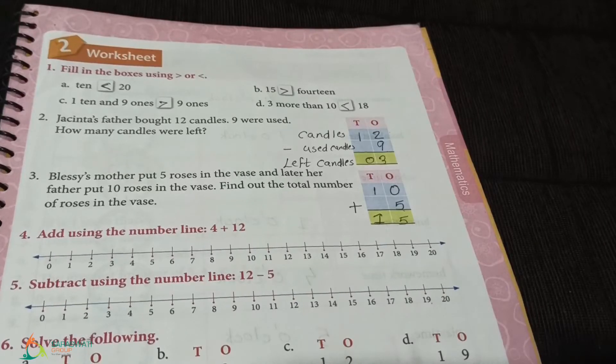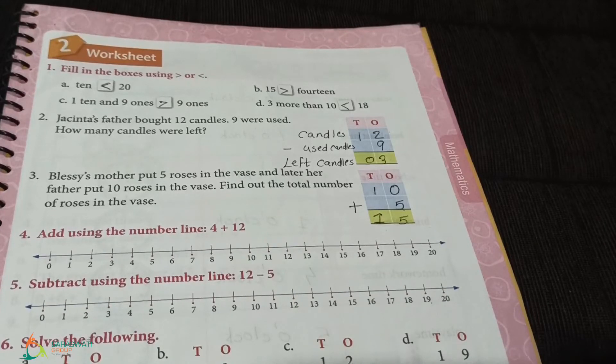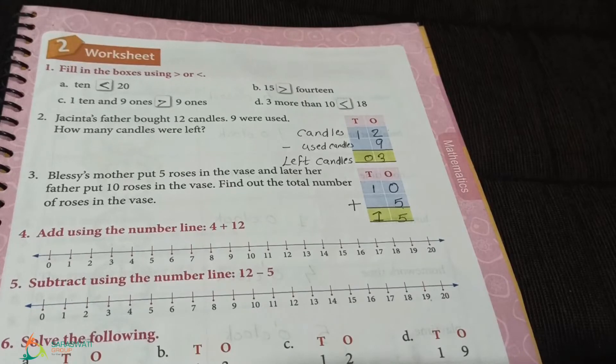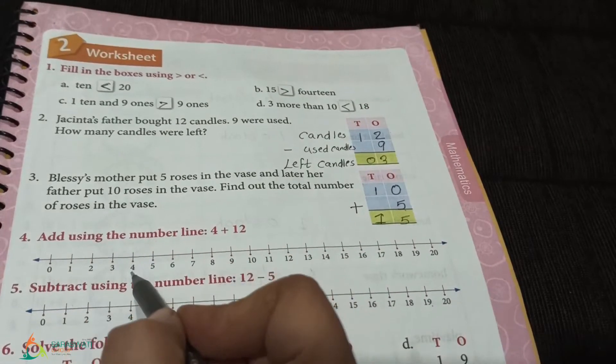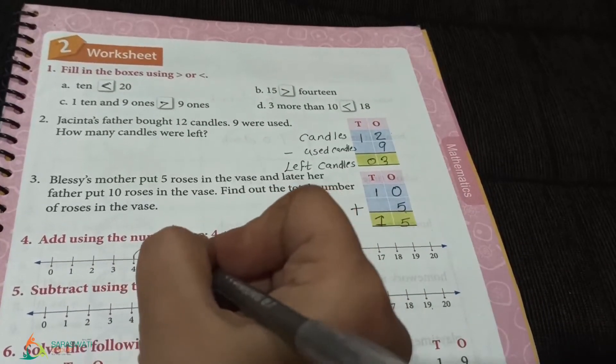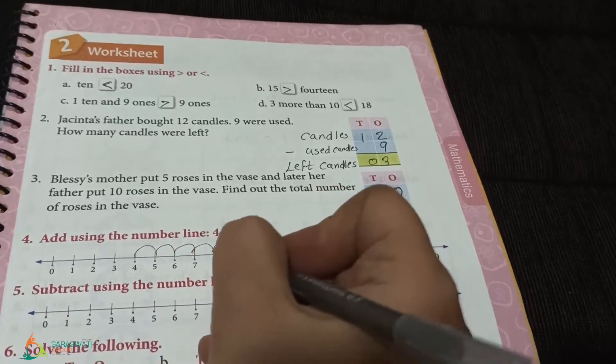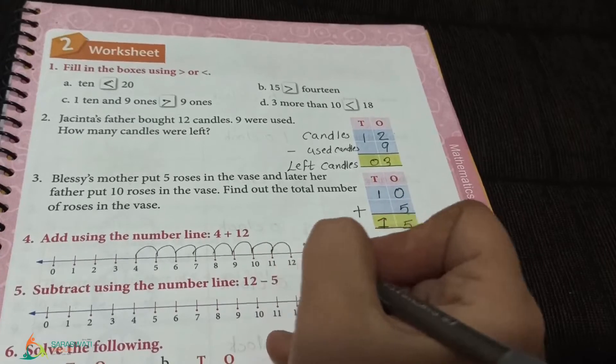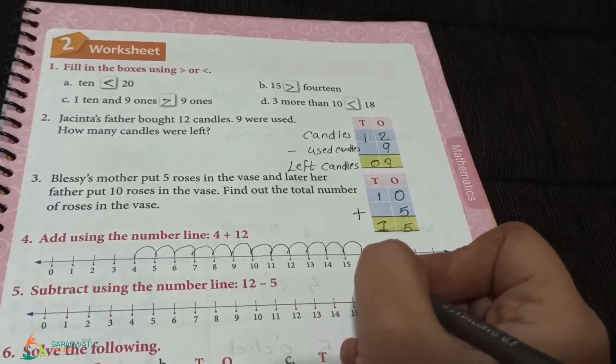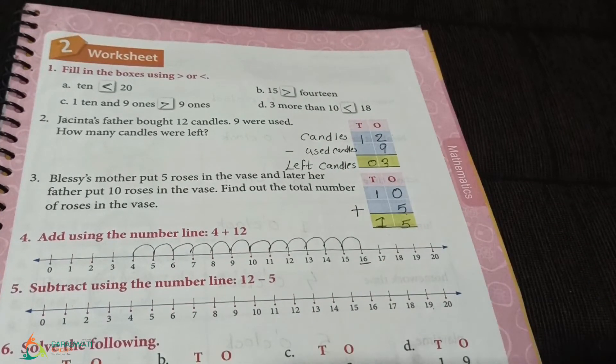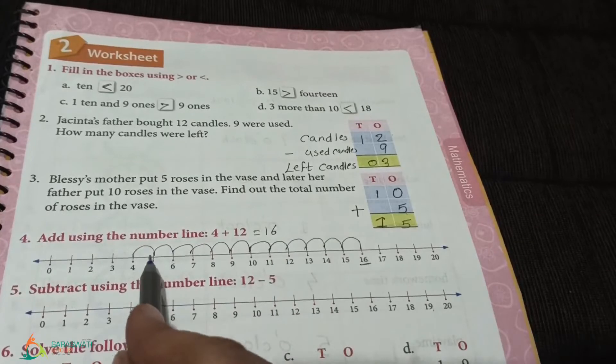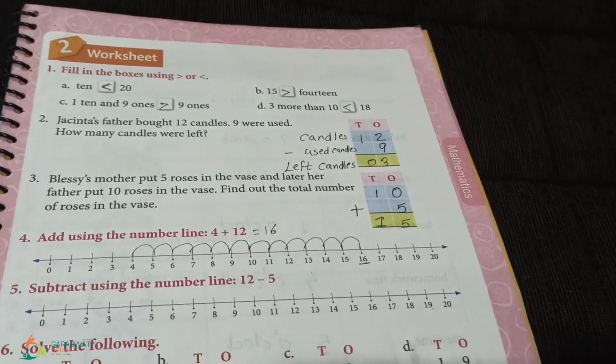Next question, add using the number line. 4 plus 12. Addition means counting forward. See, I am doing with pen, but you all are supposed to do it with pencil. First we find 4 on the number line, then plus 12 counting forward. So, 1, 2, 3, 4, 5, 6, 7, 8, 9, 10, 11, and 12. We got the number 16. So, answer is 4 plus 12 equals to 16. This was counting forward.